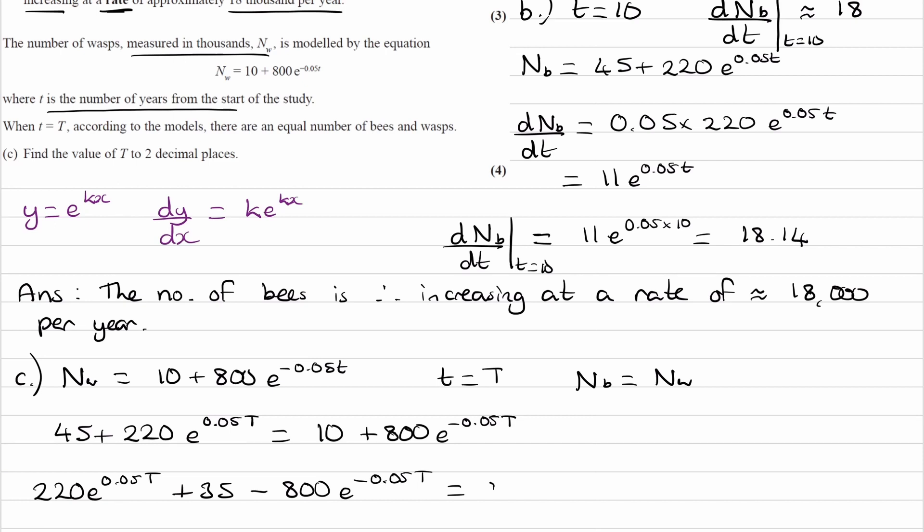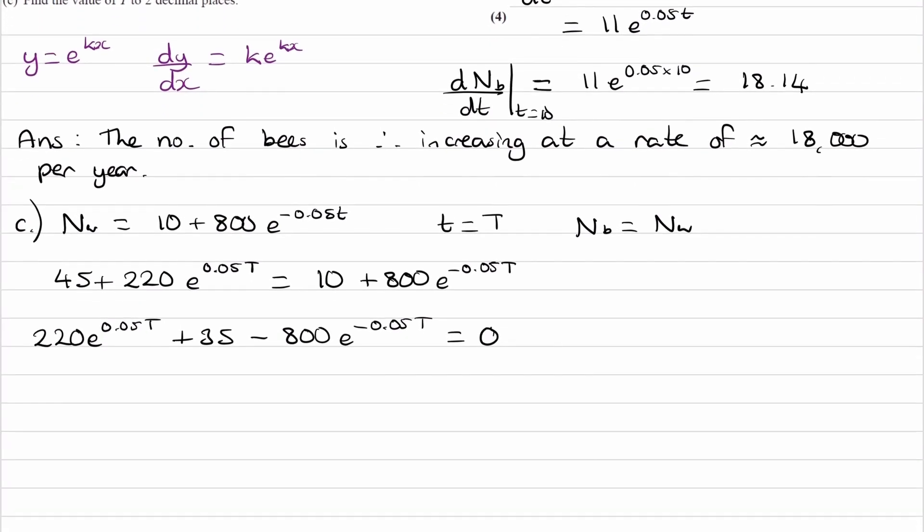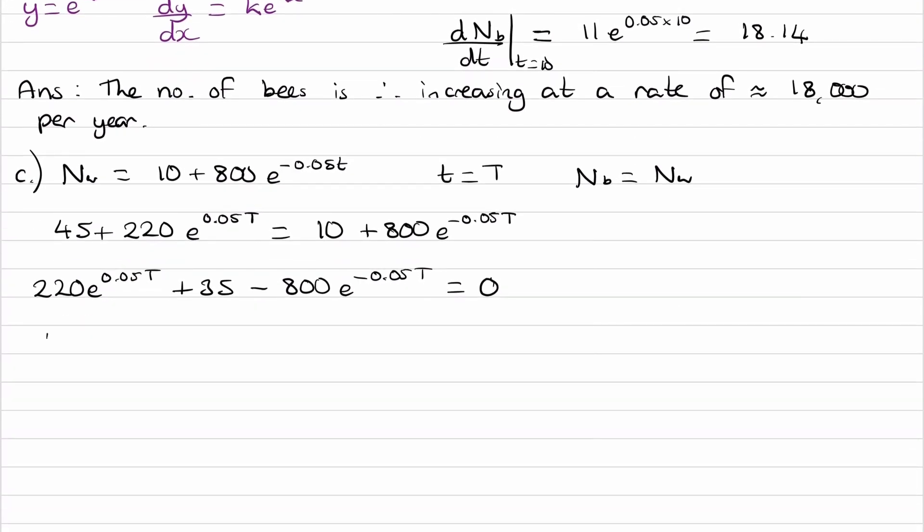So if you had got to this stage but then you weren't sure where to proceed, the idea is you want to make a substitution. Let x equal to something. Think about what should we let x be in this equation, and you want to do it in such a way that eventually you will end up with a quadratic.